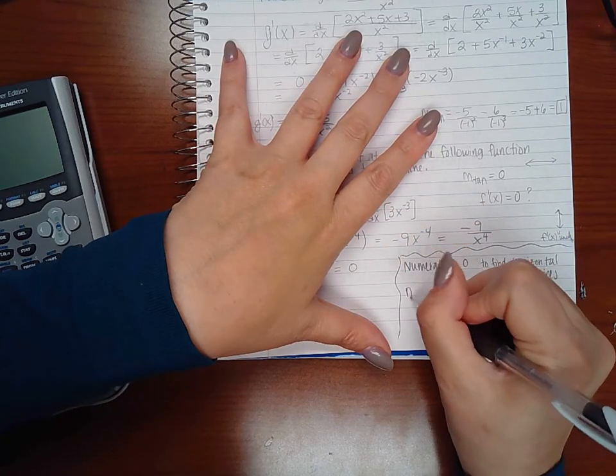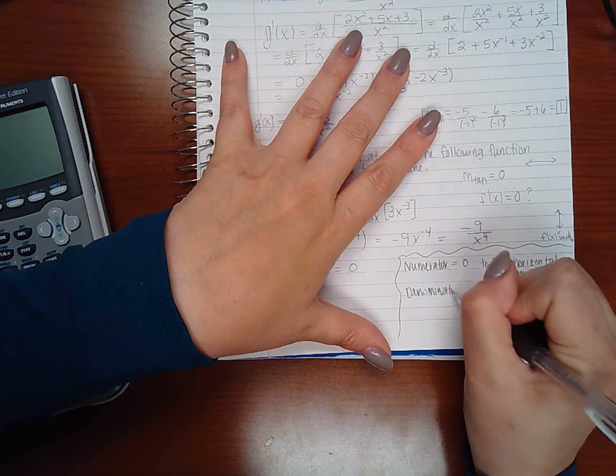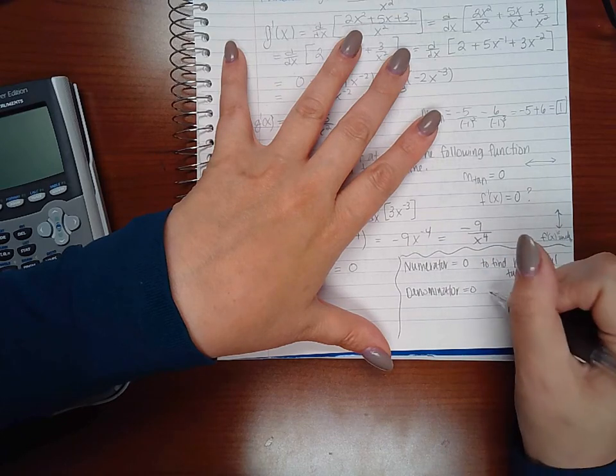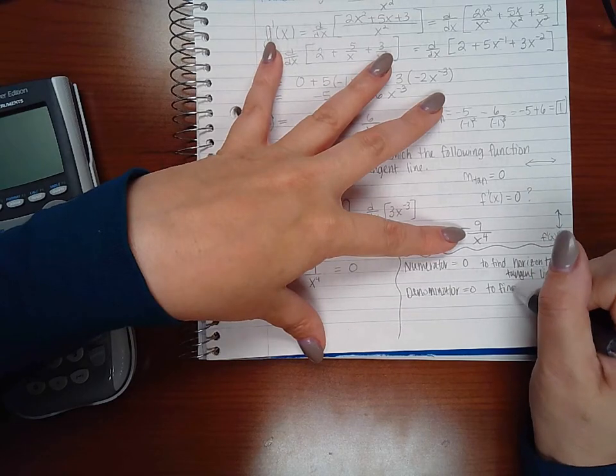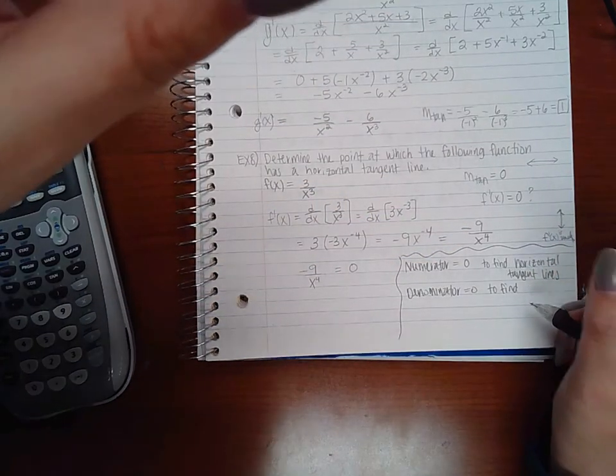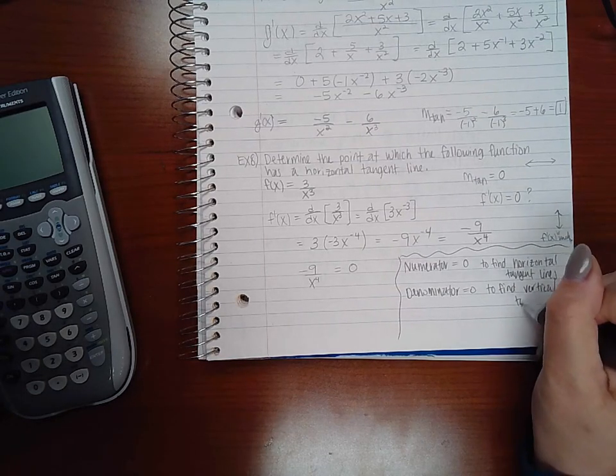And if I've set my denominator equal to 0, that is going to tell me when the fraction is undefined, so that's going to be to find vertical tangent lines.